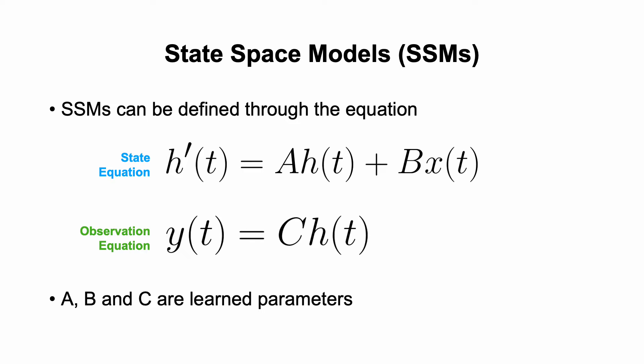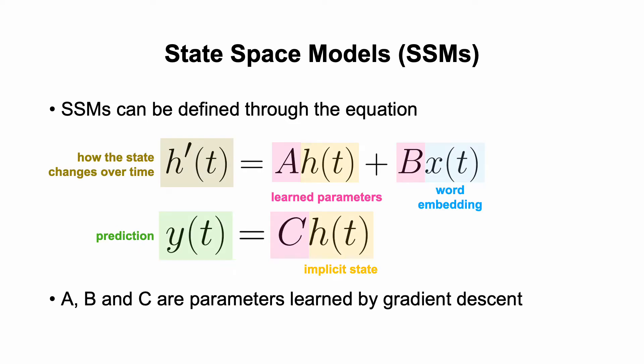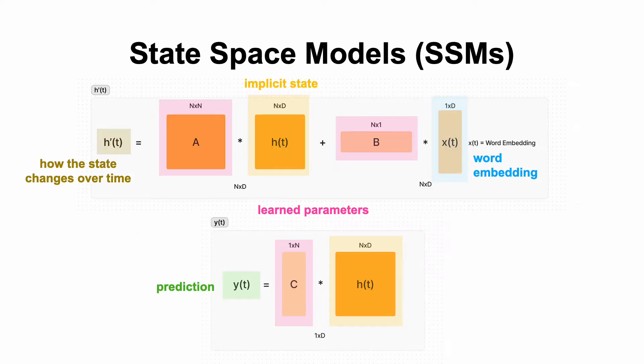But when I look at equations like this, I usually get confused, so I really like to mark things down. So, h' again, is how the state changes over time. y of t is the prediction. a, b, and c are learned parameters that can change. h' is the implicit state. And then x of t is our input, or in this case, maybe a word embedding. This is different from the standard recurrent network because it's fully linear. It doesn't have any of the nonlinear transformations that an LSTM or a GRU might have.